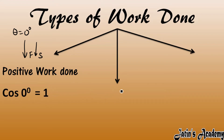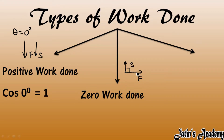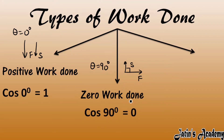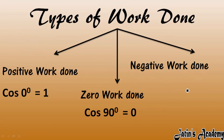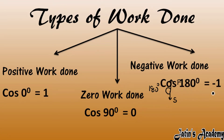Next we have zero work done. Zero work done means when the angle between the force and the displacement is 90 degrees, so cos of 90 degrees gives us zero, which gives us zero work done. Last we have negative work done. Negative work done means when force and displacement both occur in the opposite direction, so the angle between them is 180 degrees. Cos of 180 degrees gives minus one, which gives a negative work done.